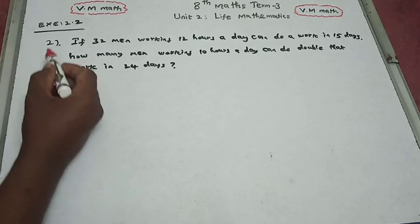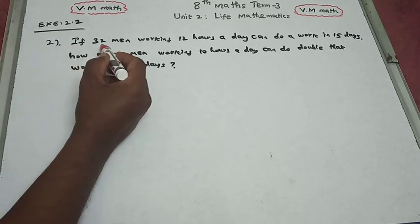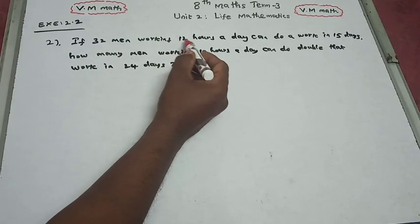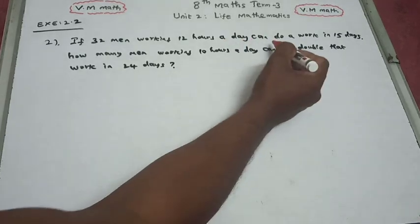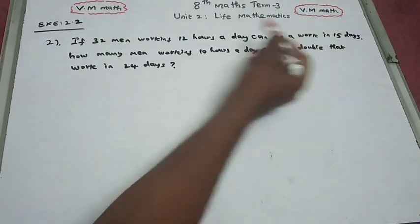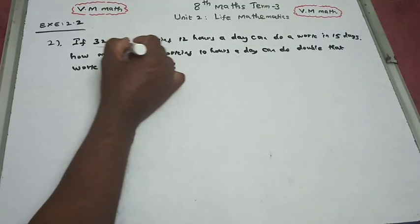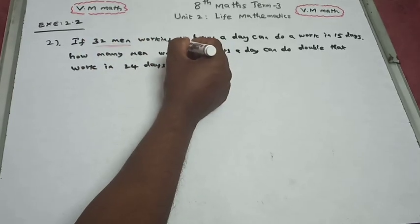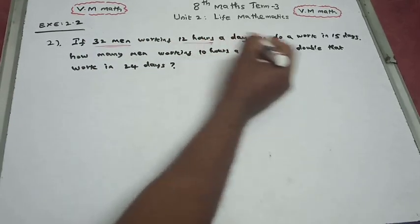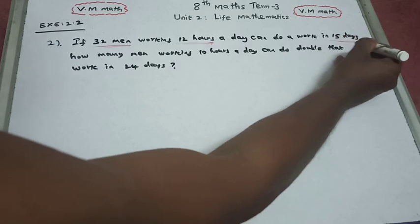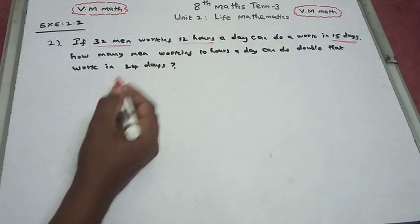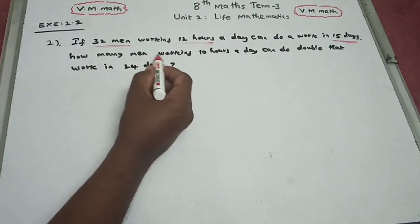Question number 2: If 32 men working 12 hours a day can do a work in 15 days, so 32 men per day, 12 hours to finish a job, 15 days. So three quantities.